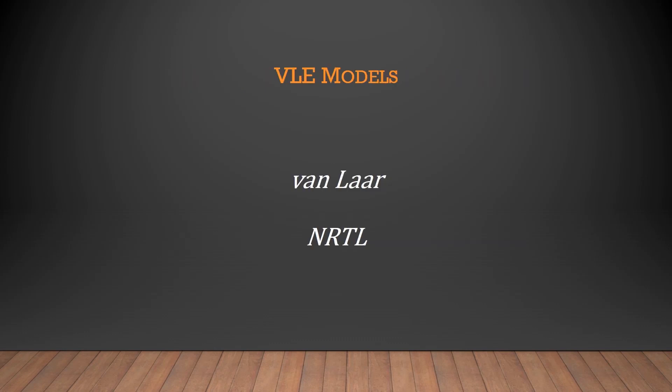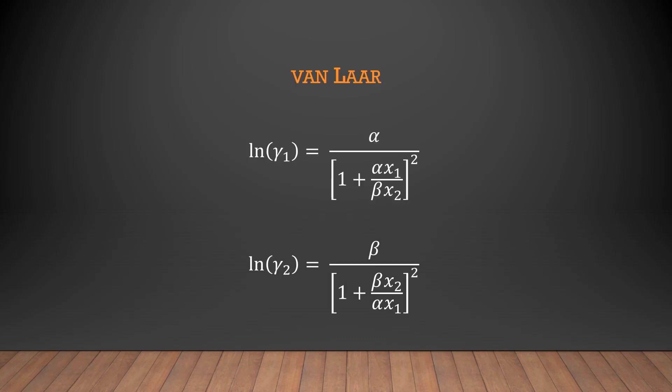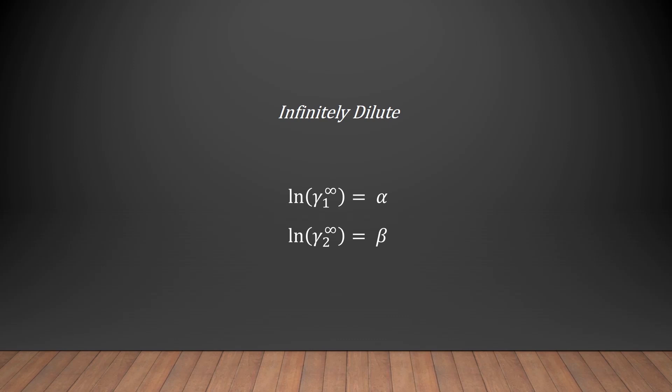After determining the infinitely dilute activity coefficients, it is necessary to convert them into activity coefficients across the entire range of dilution. To do so, it is expected to use two different models. Here, Van Laar and NRTL will be used. Starting with the Van Laar model, the equations can be seen below. Alpha and beta are binary interaction parameters that vary with all binary systems. To determine the values of alpha and beta for each system, we must manipulate the previous equations for the infinitely dilute regime. Once the values of alpha and beta are determined, the values of the activity coefficients at all stages of dilution are fixed and can be calculated with the previous equations.